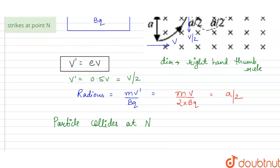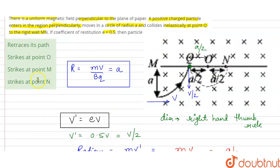So we can say that our particle collides at N. So our correct option is option D strikes at N. Thank you.